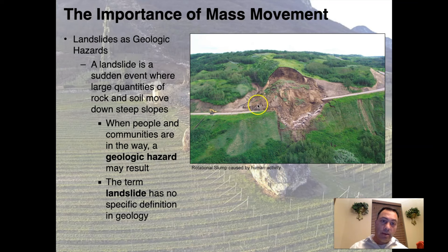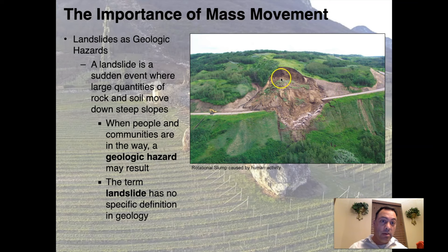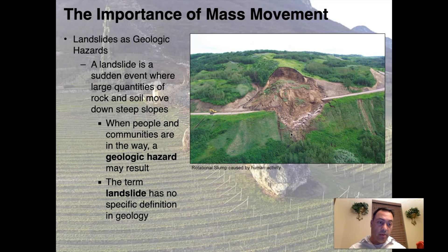This rotational slump was caused by human activity — it's no accident it occurred along this road. We can forensically determine what caused it: road construction over-steepened the hillslope behind it. They cut back this area but apparently not enough, so this portion failed. That's going to cause a large amount of damage — imagine running into that slope on the road; people could get killed.